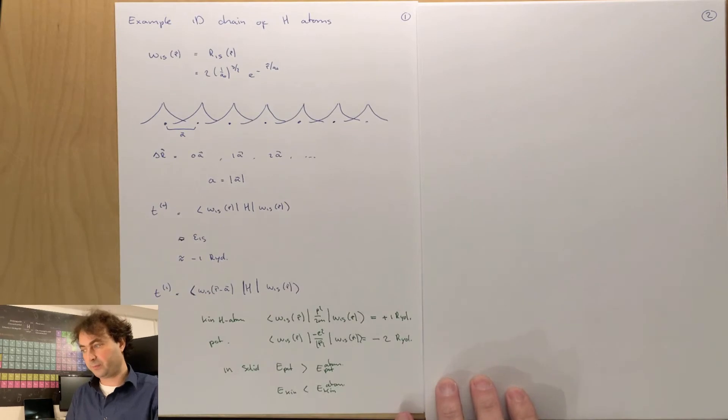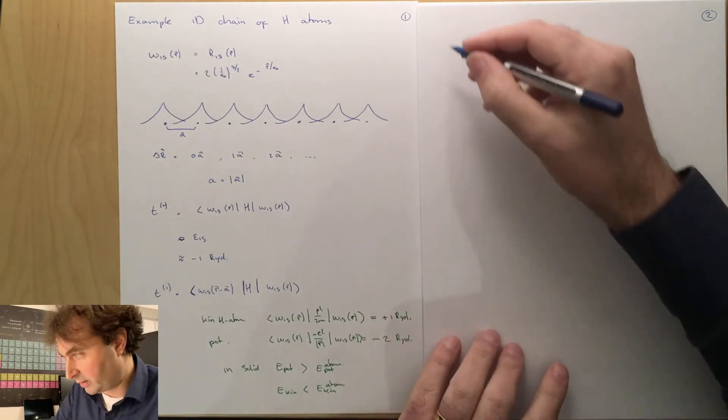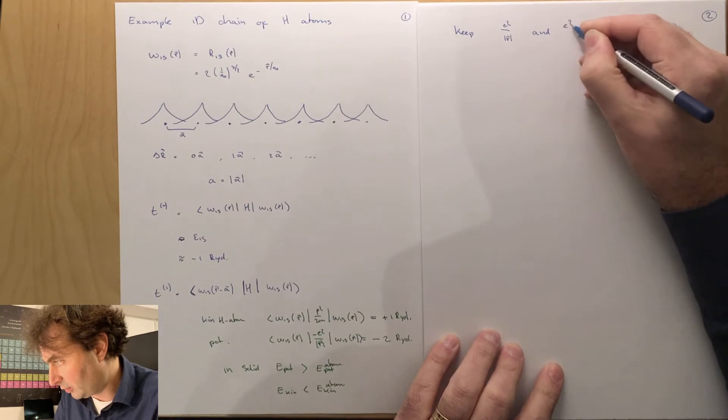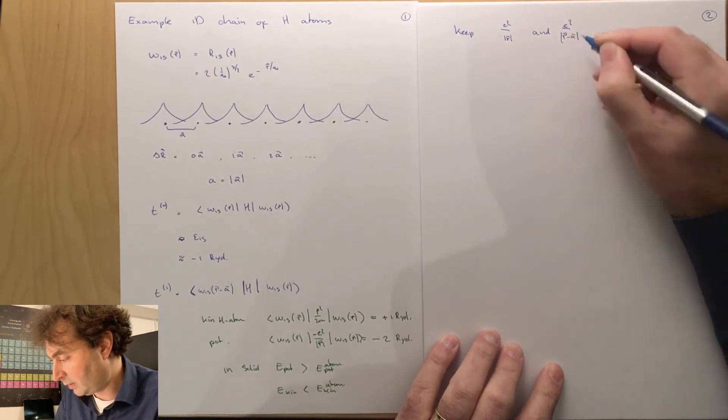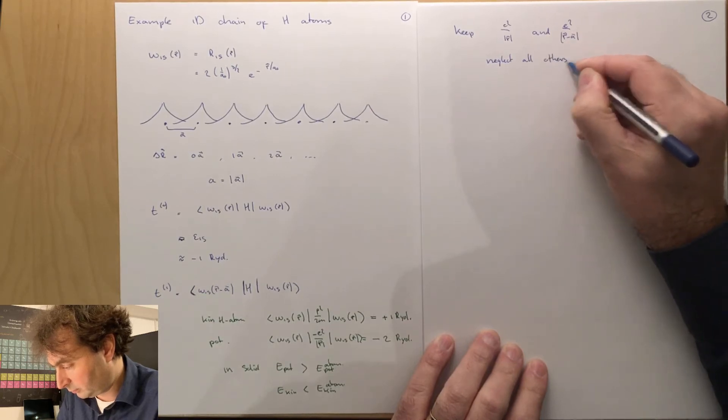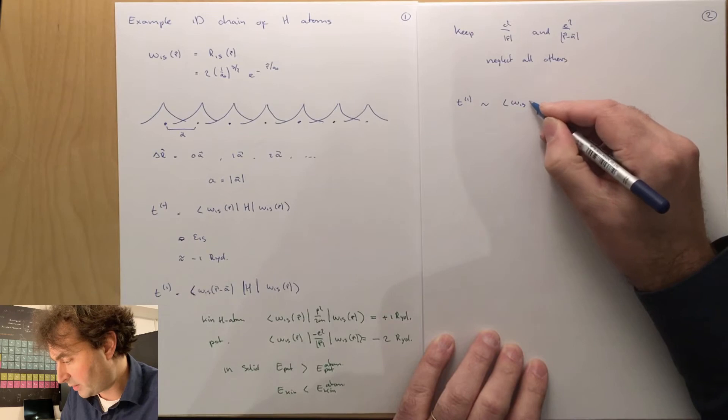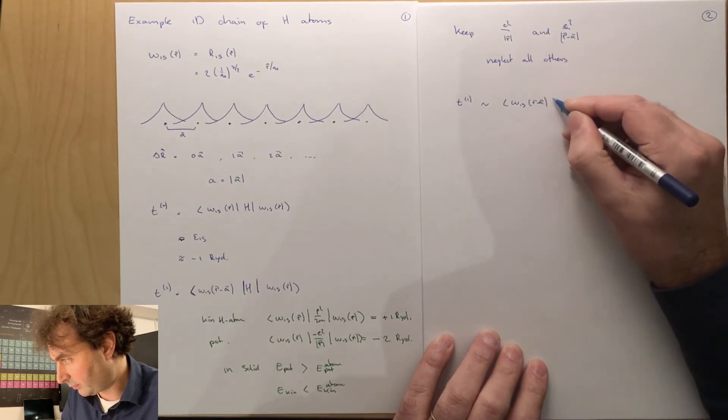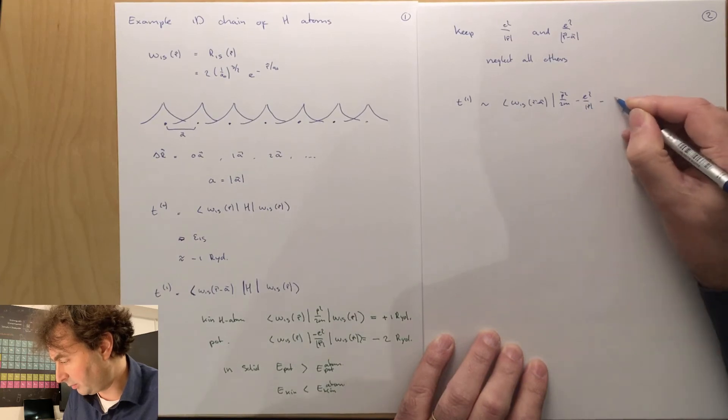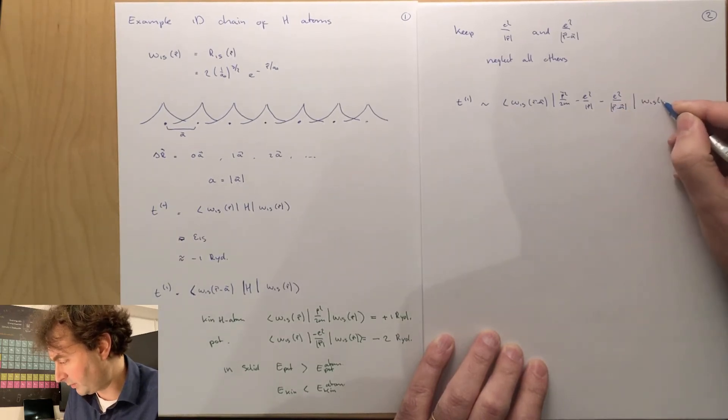Let's see if we can estimate what this integral is. So let's neglect some long-range potential energy. So we're going to keep only E square over R and E square over R minus A in our Hamiltonian. But neglect all others. Then our nearest neighbor hopping integral is omega 1s, R minus A, times p square over 2m minus E square over R minus E square over R minus A, times omega 1s of R.